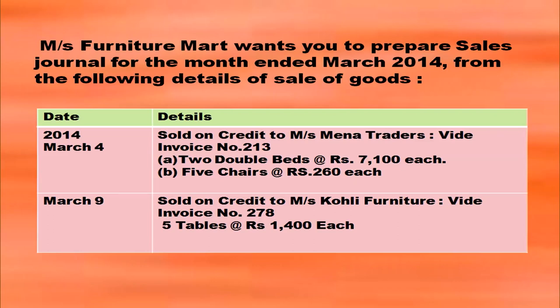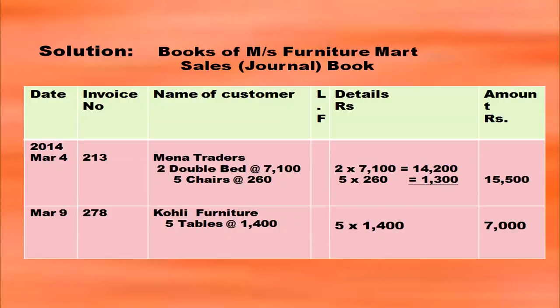On March 9th, sold on credit to Messrs Kohli Furniture — five tables at Rs. 1,400 each. The format of the sales book should be drawn with heading: books of Messrs Furniture Mart. You are preparing a sales book or sales journal. Draw the format with columns: date, invoice number, name of the customer, ledger folio, details, and amount.